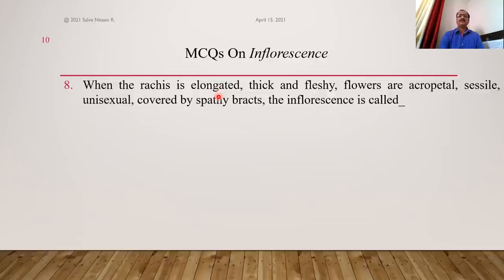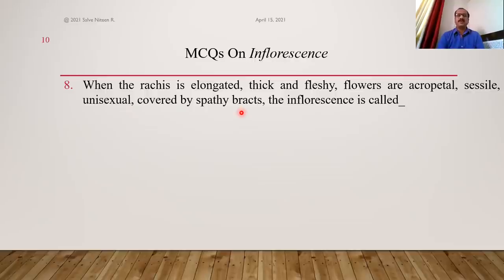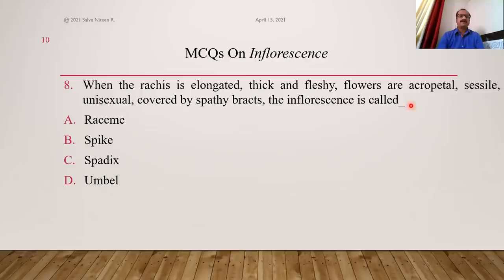When the rachis is elongated, thick and fleshy, flowers are again acropetal (racimose type), flowers are sessile just like spike, but flowers are unisexual and the whole inflorescence is covered by a protective structure called a spathe — formed by bracts. Such an inflorescence is called spadix. All these characters represent spadix inflorescence, so C is the right answer.